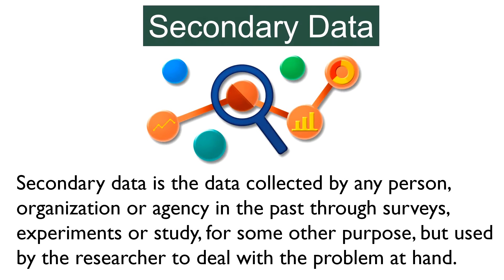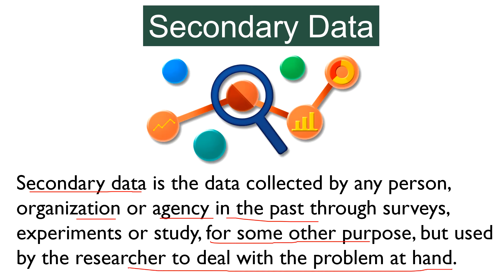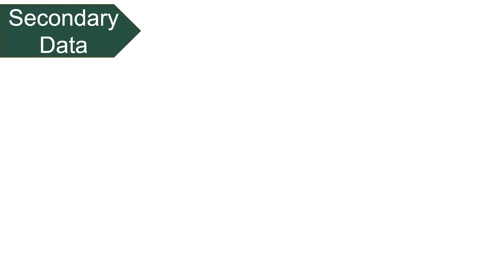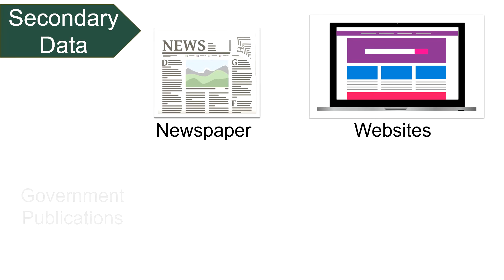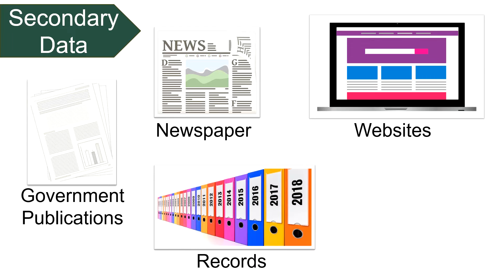Secondary Data refers to the data collected by any person, organization or agency in the past through surveys, experiment or study for some other purpose, but used by the researcher to deal with the problem at hand. Meaning that secondary data is any type of data which is previously collected for some other reason but due to its connection or similarity with the topic under new research it is used by the investigator for his own purpose. So the sources of secondary data are newspaper, websites, government publications, internal records and books.